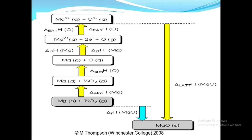In the fourth step, it was the conversion of oxygen to the oxide ion, O²⁻, in gaseous form. For that we need the first electron affinity and second electron affinity of oxygen. All these steps are shown in ascending order in the upward direction, which means that energetically all these processes are endothermic.